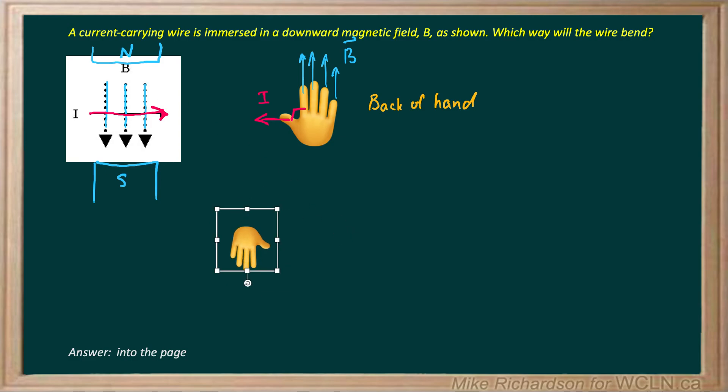So here I've got fingertips down. So magnetic field lines are down. My thumb is pointed straight to the right in the direction of my current, and the palm of my hand, which remember this is the back of the hand, is pushing into the page. So that'll be the direction of my force into the page.